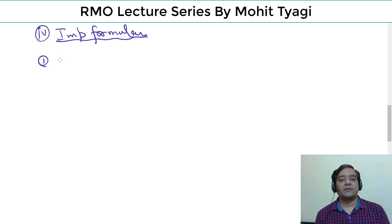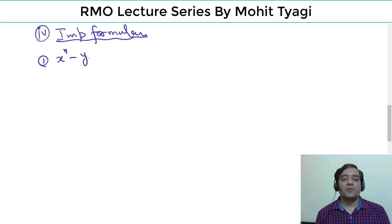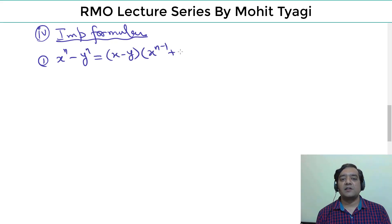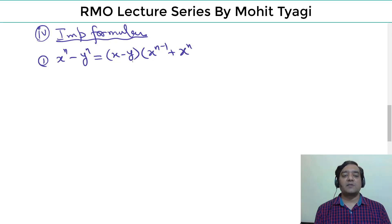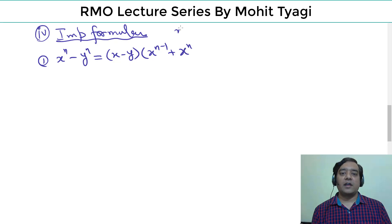Fourth important formula: xⁿ − yⁿ can always be written as (x − y) times a bracket, where n is a natural number. So (x−y) is always a factor of xⁿ − yⁿ.